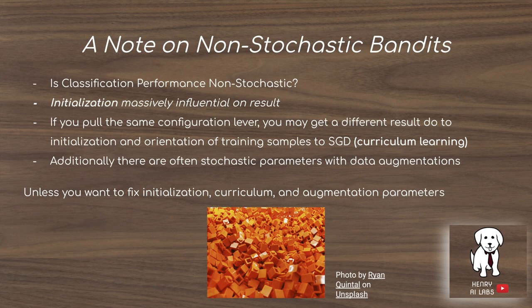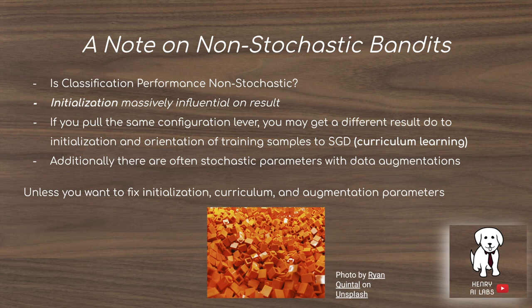The paper also discusses a non-stochastic banded algorithm, but classification performance is really stochastic because of weight initialization, the curriculum — meaning the order in which the training set is presented — and data augmentation parameters, which are largely stochastic. Even with the same configuration, you won't get the same result multiple times. So it's really important to repeat the Hyperband algorithm to account for this variability.